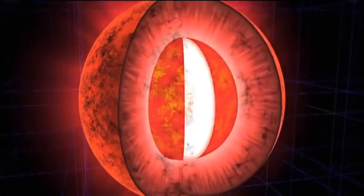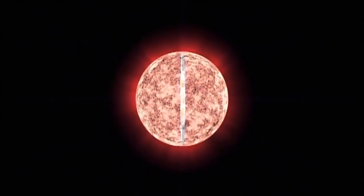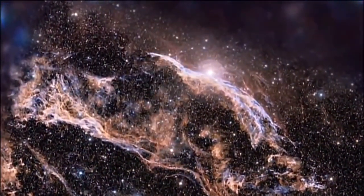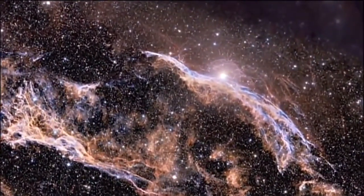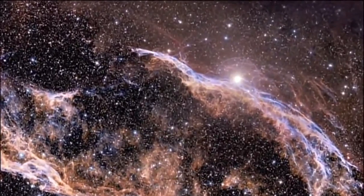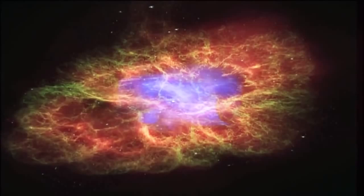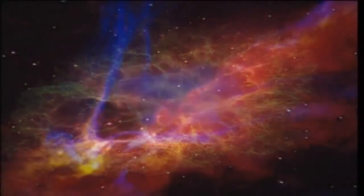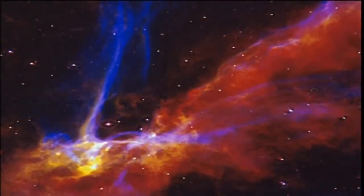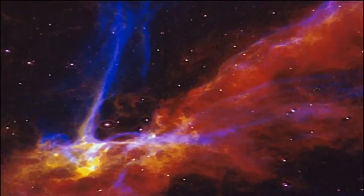In some cases, as matter slams into the star's core, the impact creates a powerful shockwave that races back out and literally blows the star apart. Our galaxy is littered with the scattered remains of these supernovae, as shown in images like these from the Hubble Space Telescope. But what happens to the collapsed core of these dead stars?